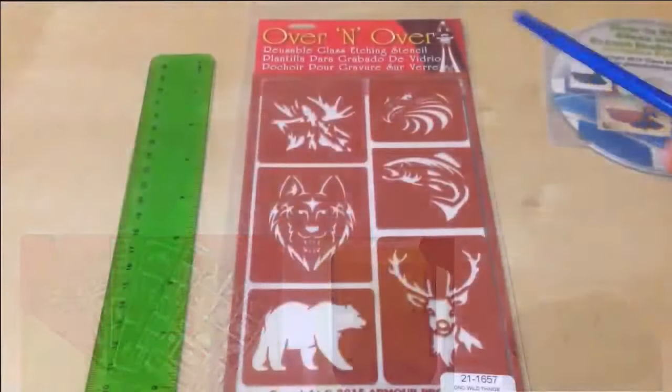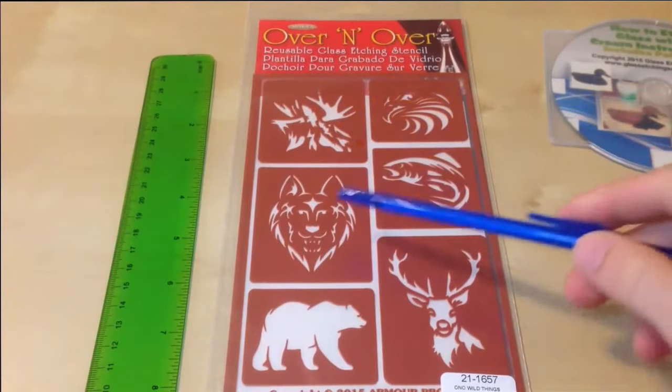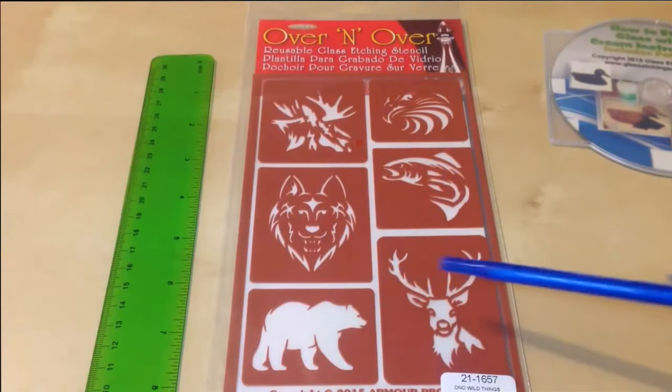Okay, here's a view of the wild animal stencil sheet. It includes six stencils: an elk, an eagle, a wolf, a fish, a bear, and a deer.